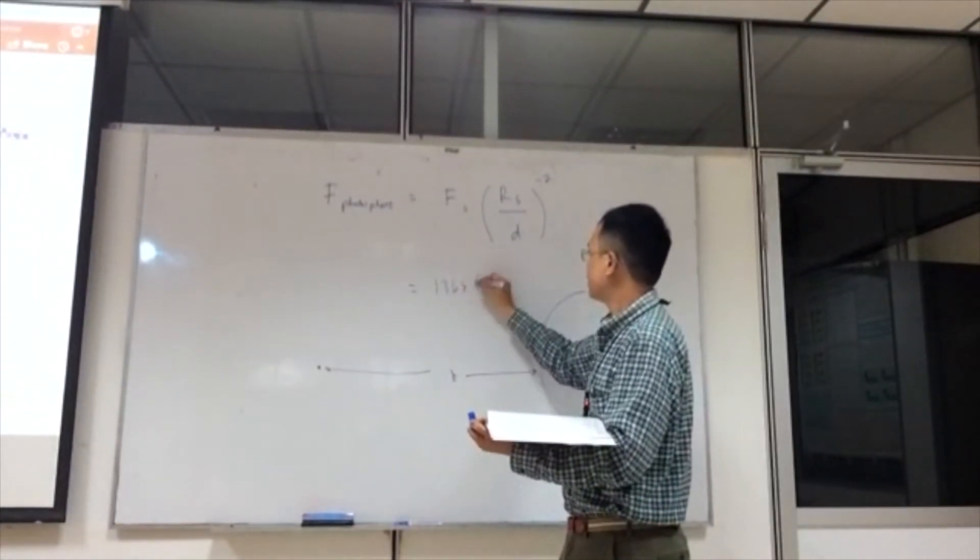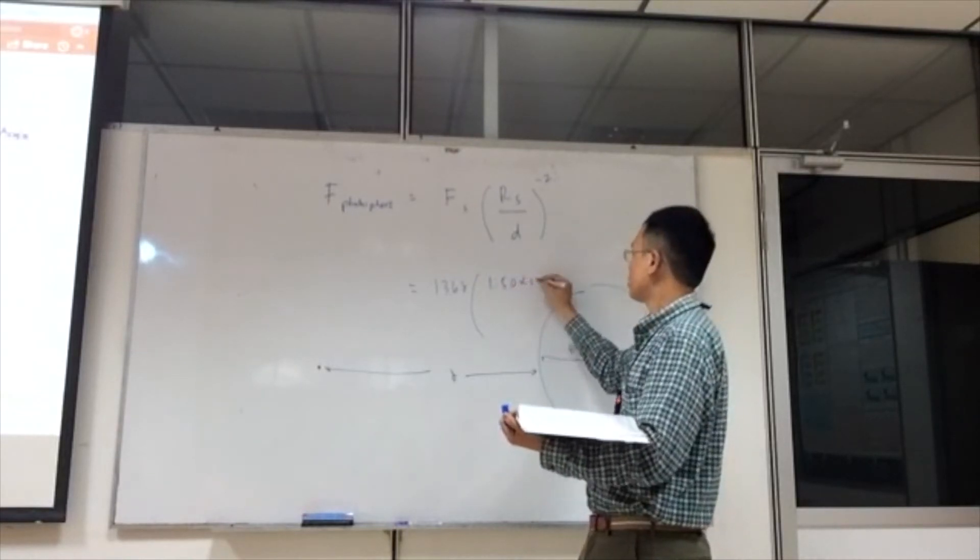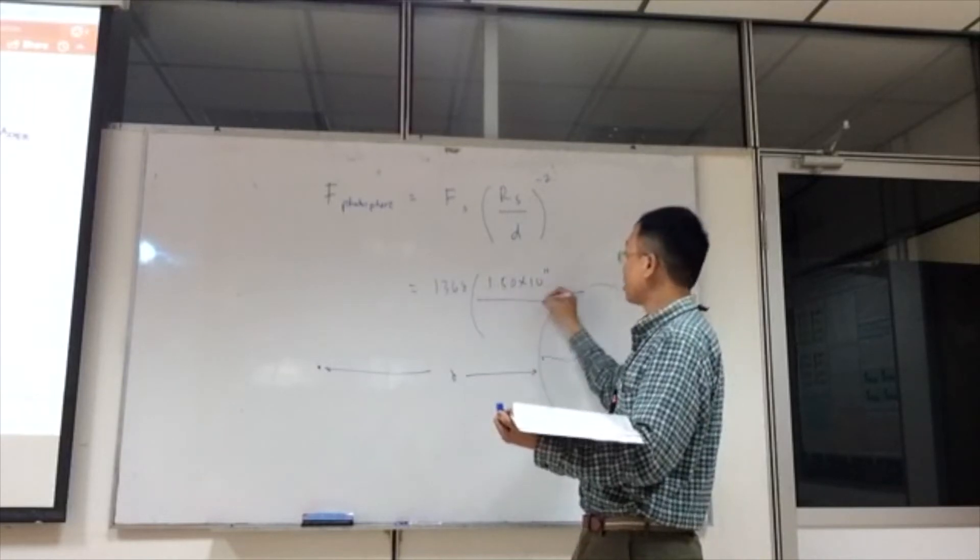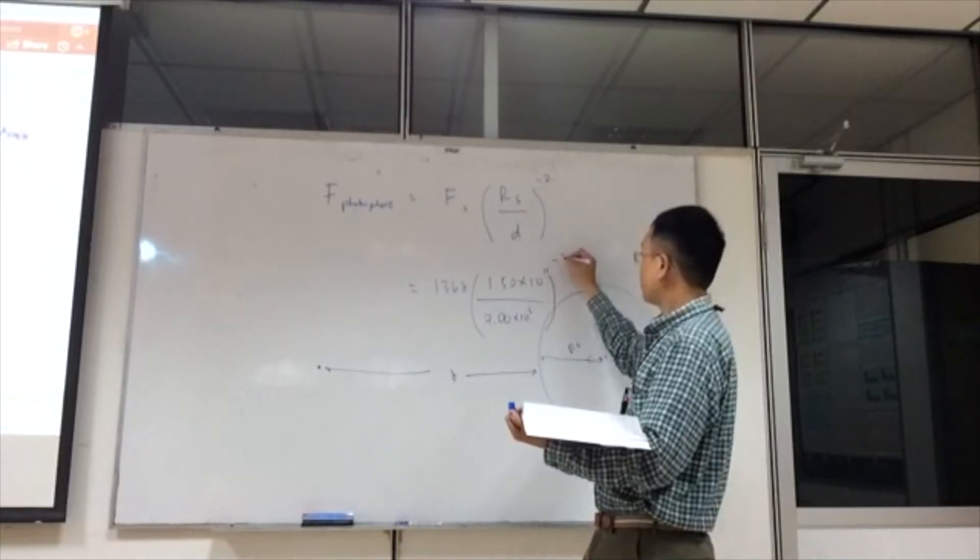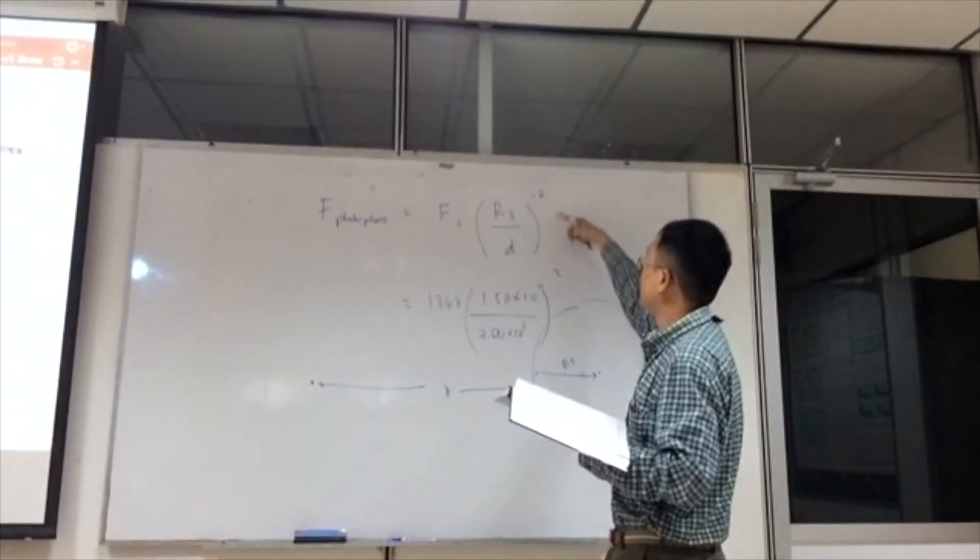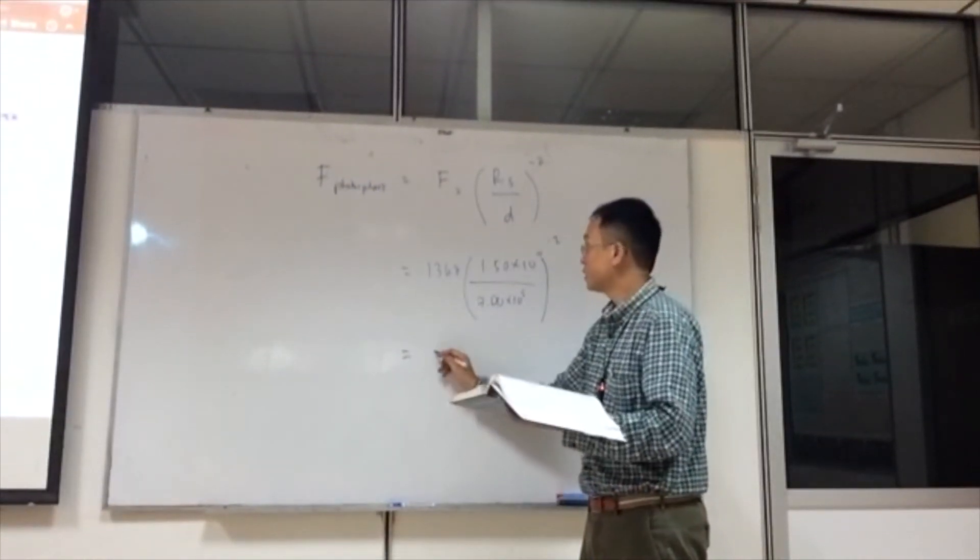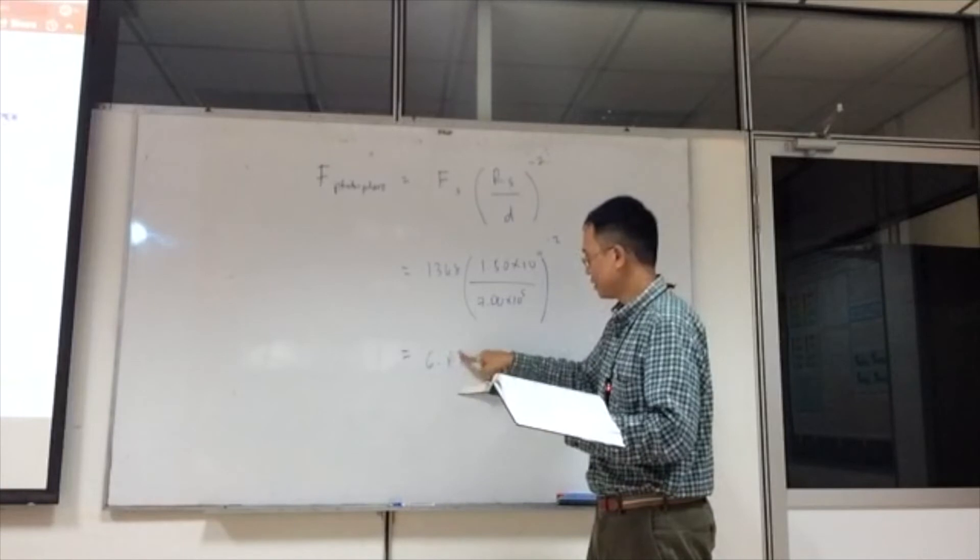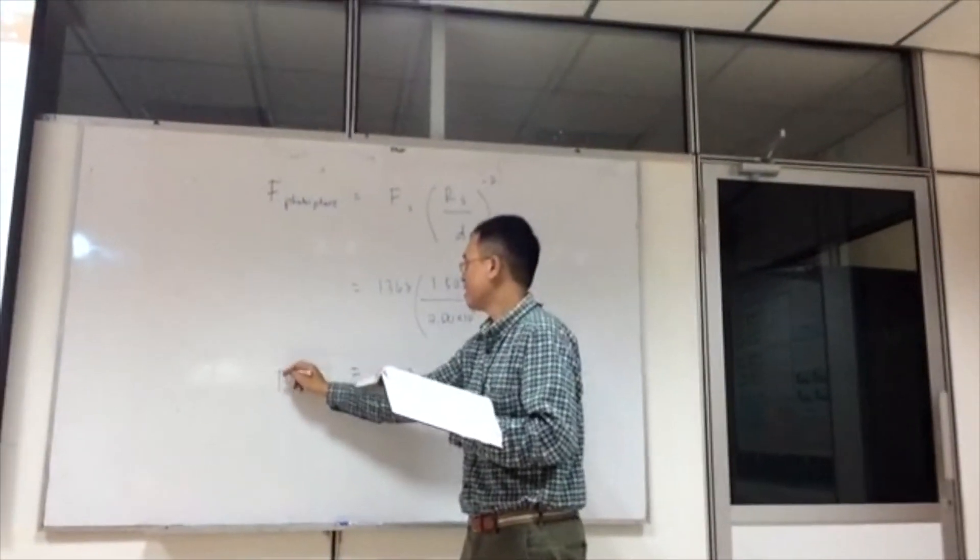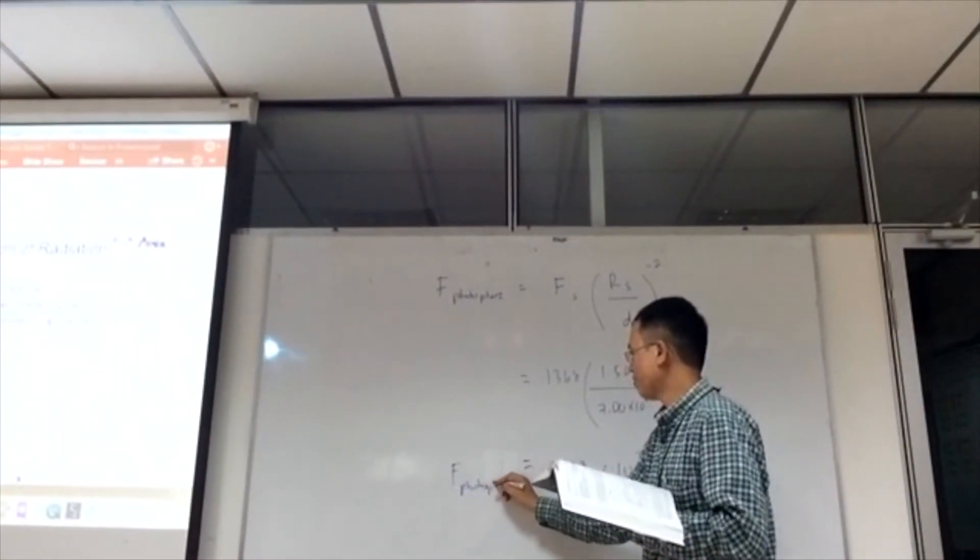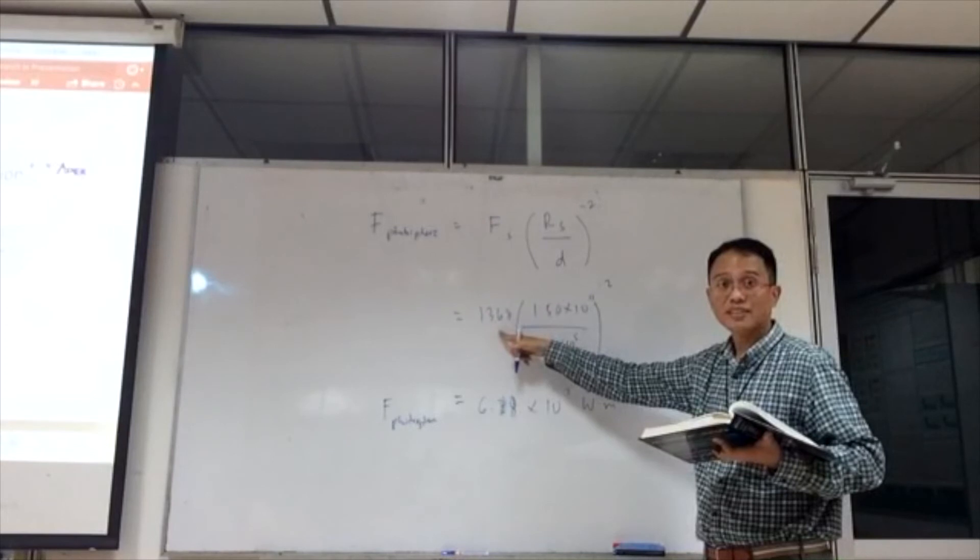So this is 1368, what is Rs? 1.5 times 10 to the power of 11 meters divided by d which is 7.00 times 10 to the power of 8 meters, power of negative 2. No, this is the same, it's just that it's inverse. Well if you want it to be negative 2 then it will just be separate the other way around. And you should get 6.28 times 10 to the power of 7 watt per meter square, and that is the F of the photosphere, which is a lot higher than just 1368 on the surface of the sun.